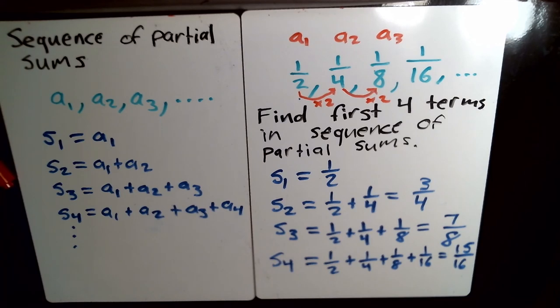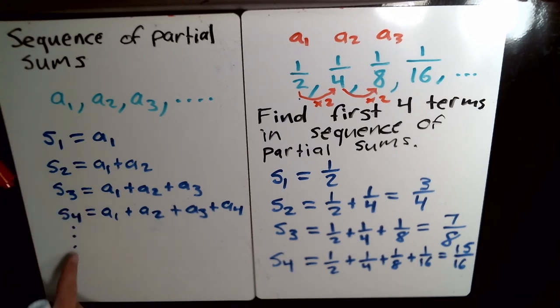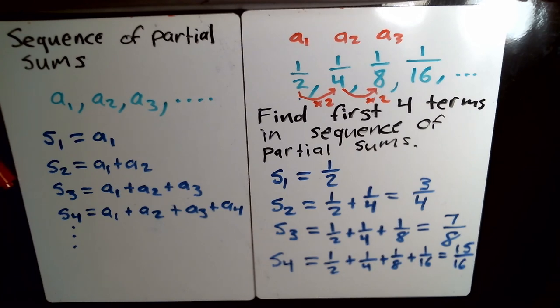And this is kind of a way that you approach that because you're adding increasingly large amount of numbers to each other. And then if that sequence, if this sequence gets really close to something in calculus, we say that it converges.